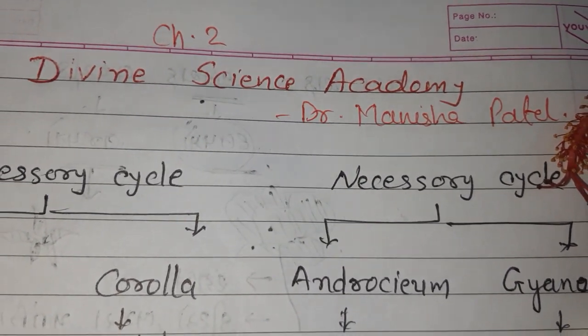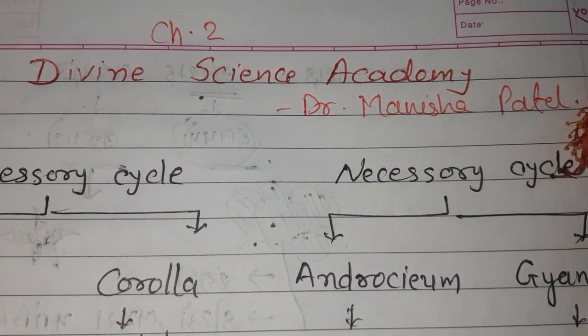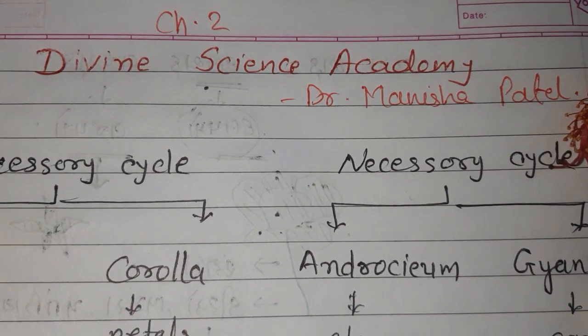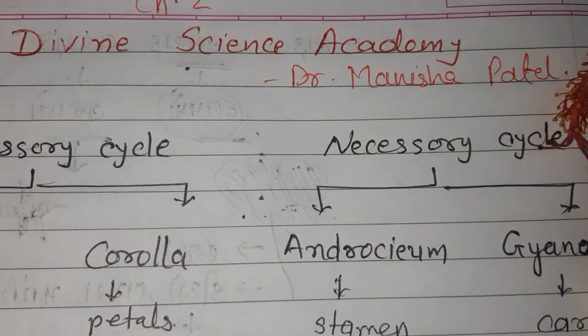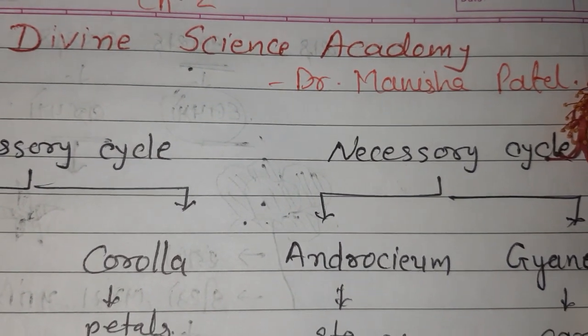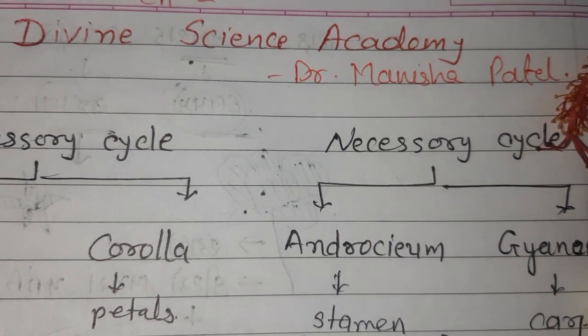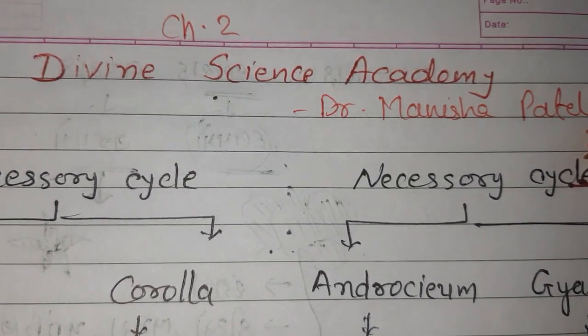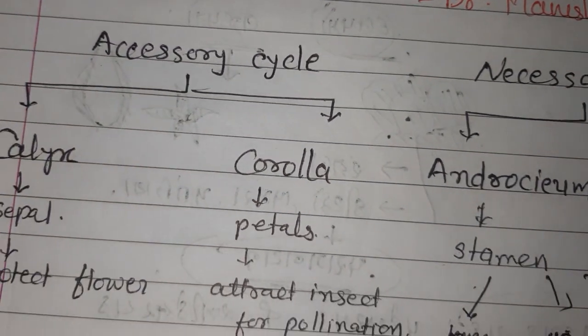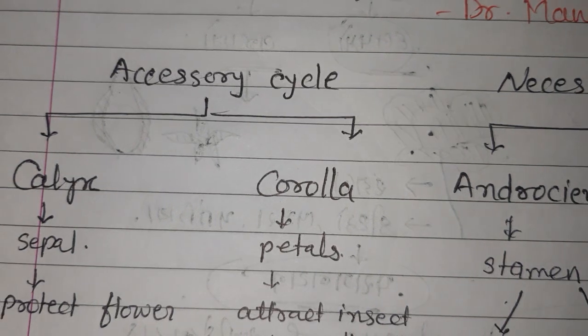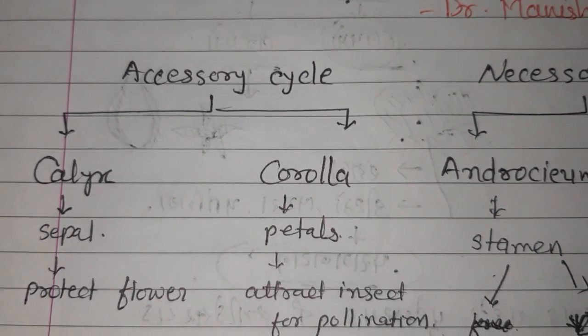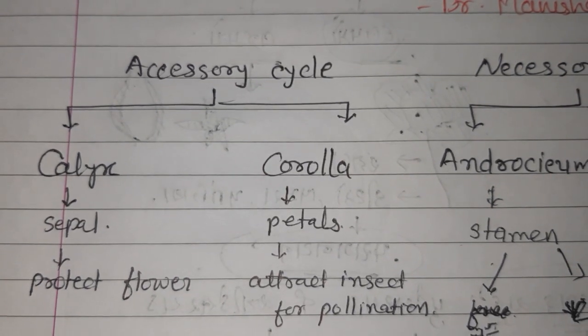Hello, Jai Hind! Dr. Manisha Patel from Divine Science Academy. Today we will start chapter number two, sexual reproduction in flowering plants. You know flowers, we have already learned in standard 11. Mainly, a flower has two cycles: accessory and necessary. When we talk about accessory cycle, it contains calyx and corolla.